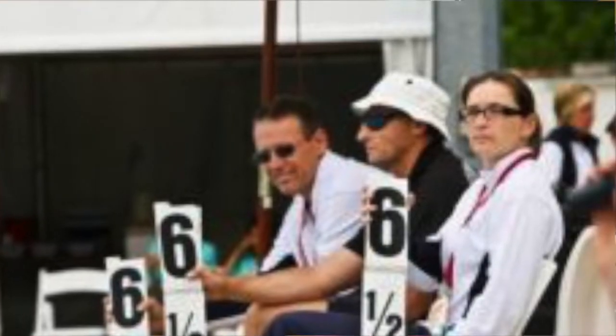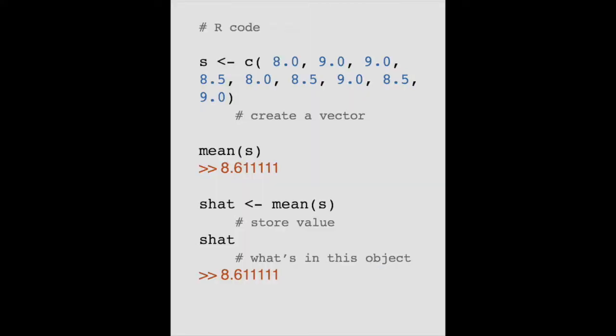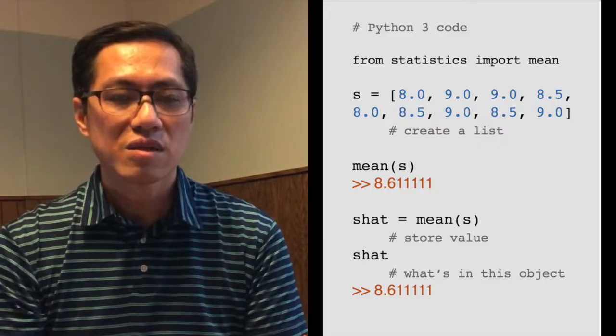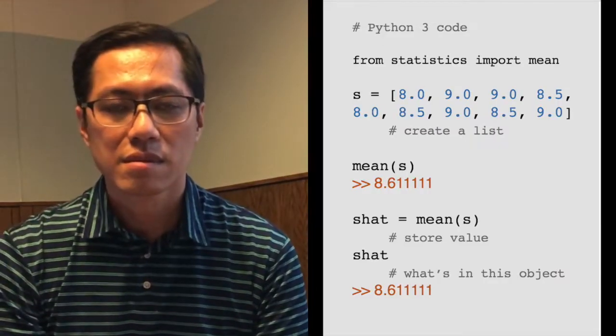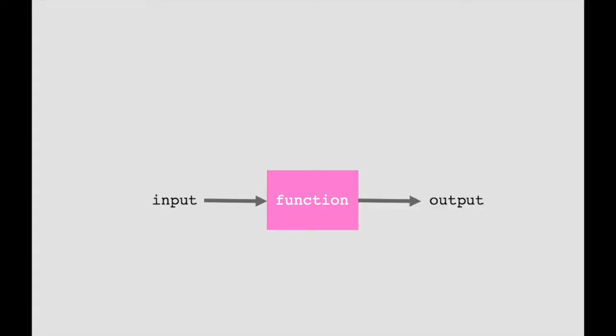Let's say there's a diving competition with 10 judges submitting scores. To compute the average score, we use a function. In R, this is what you write. In Python, you write the following. Now in Excel, you do this. You may have noticed a pattern here. Each of these functions takes an input object, transforms it, and returns an output object.